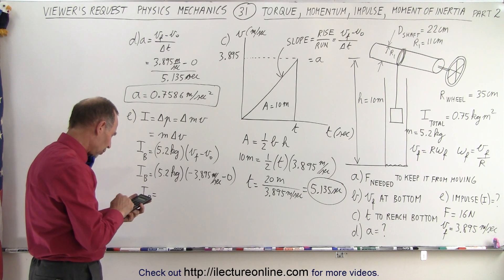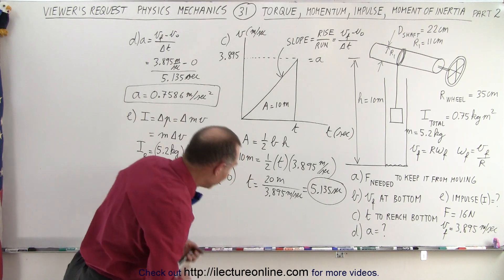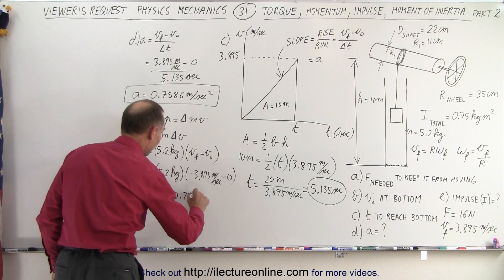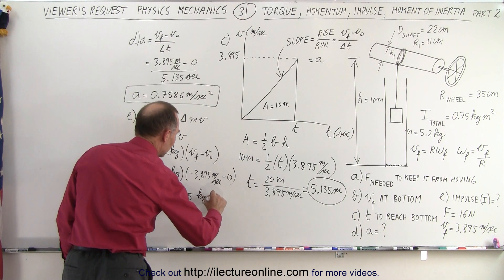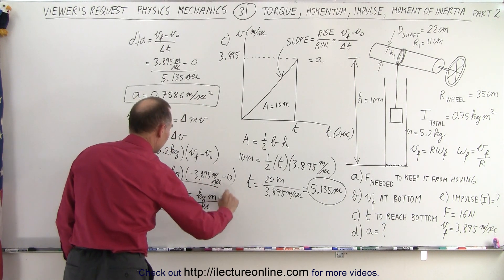And so impulse is indeed going to be a negative quantity, so to speak, if you want to keep track of the negative sign. So taking 5.2 times 3.895 equals 20.25, that would be a negative 20.25, and that would be kilograms meters per second. That's the impulse of the bucket.